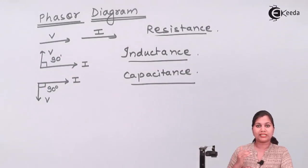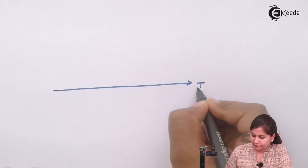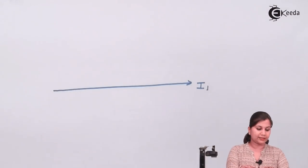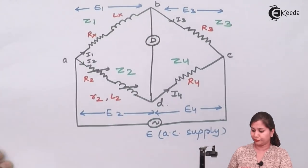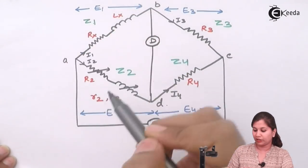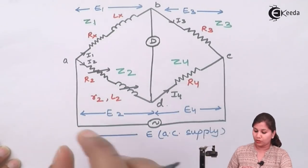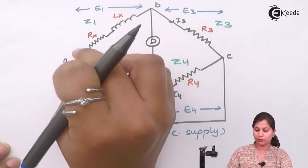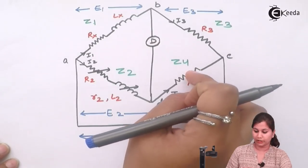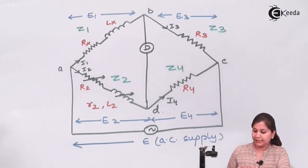To draw the phasor diagram, we first take a reference phasor, and all other phasors are drawn with respect to that reference. We will use current I1 as our reference phasor. The current flowing in each arm is represented as I1, I2, I3, and I4; the voltage drop across each arm is E1, E2, E3, and E4; and E is the total voltage.